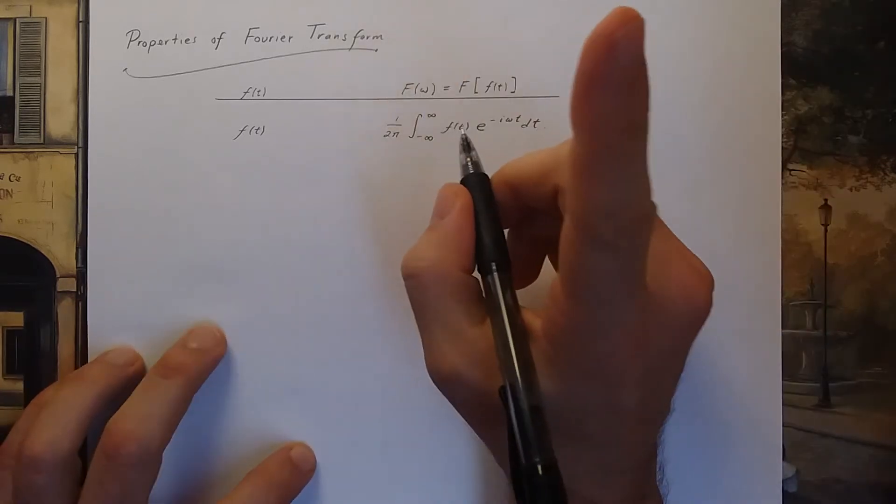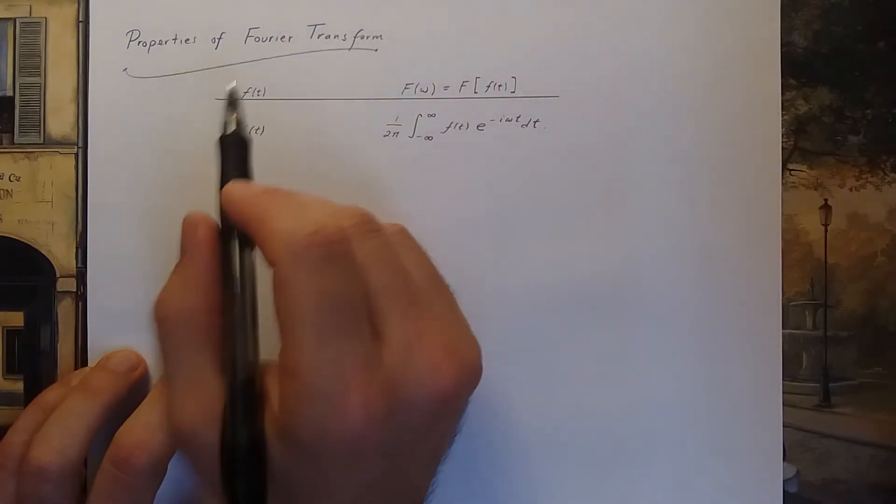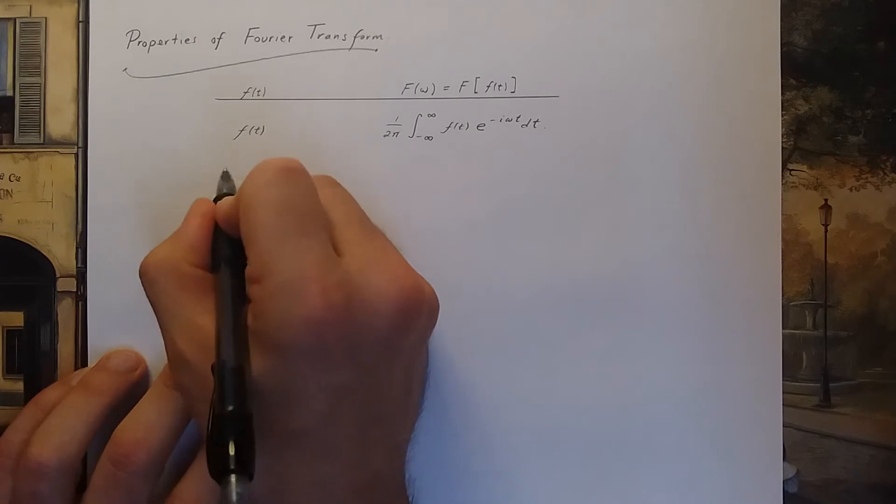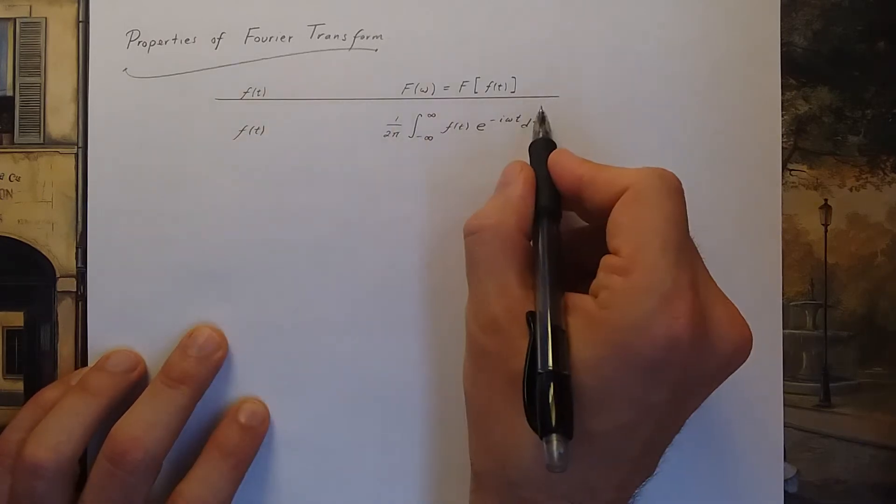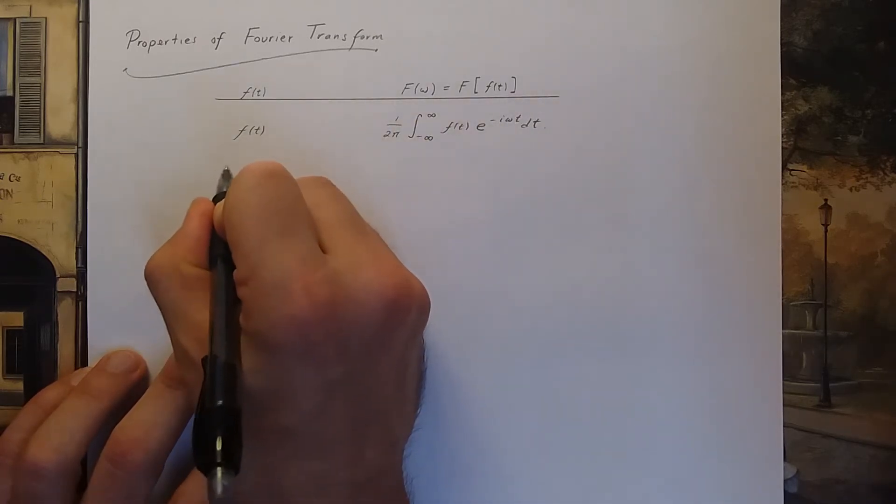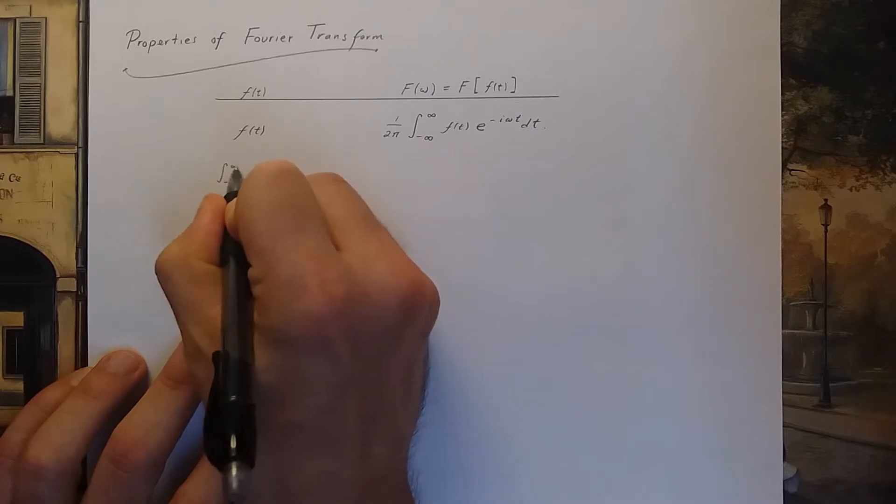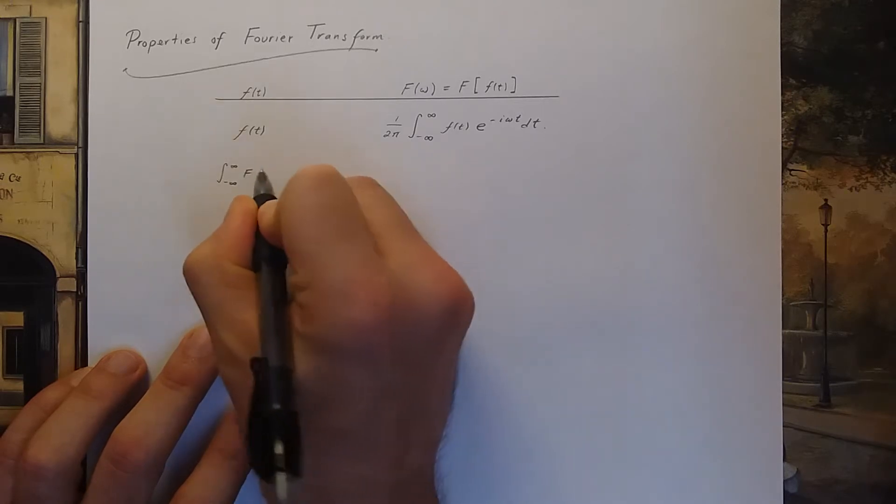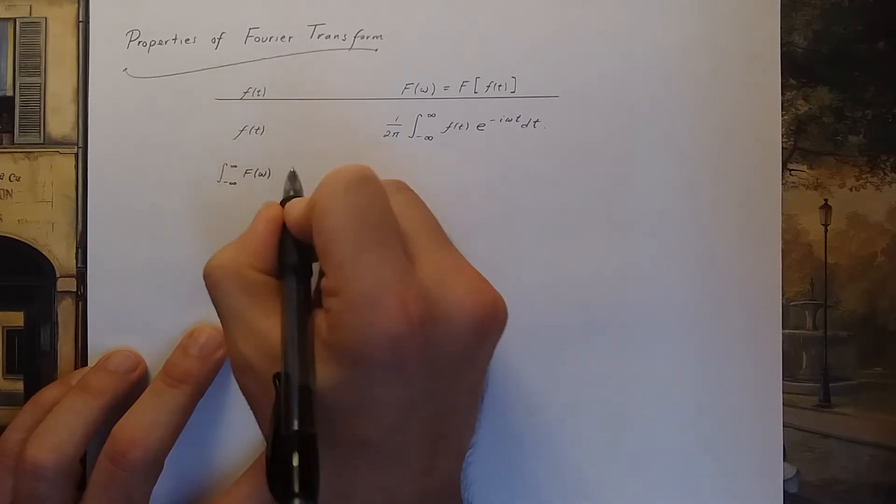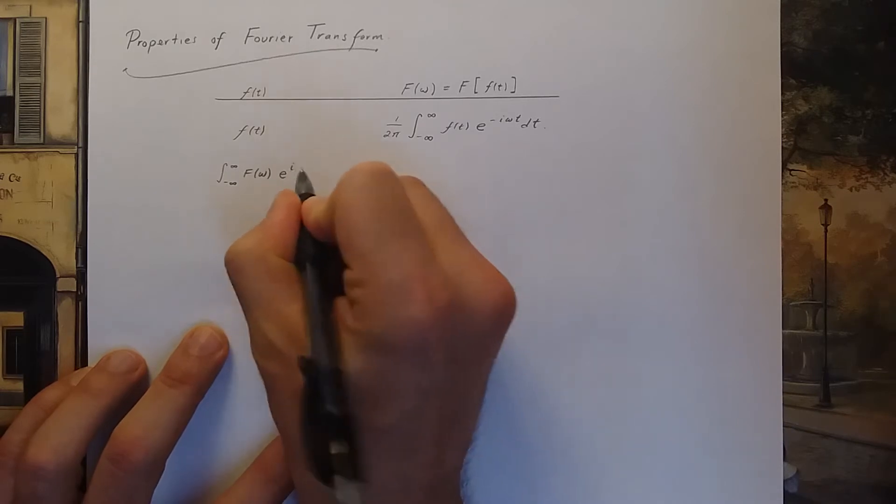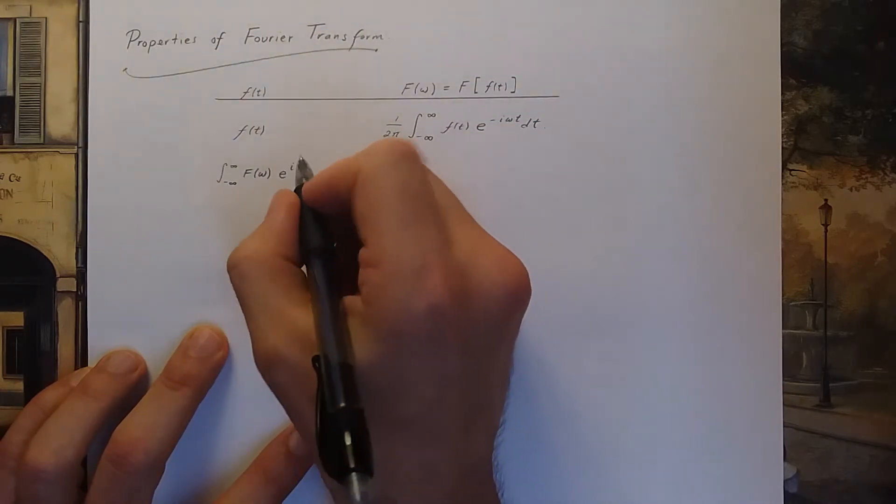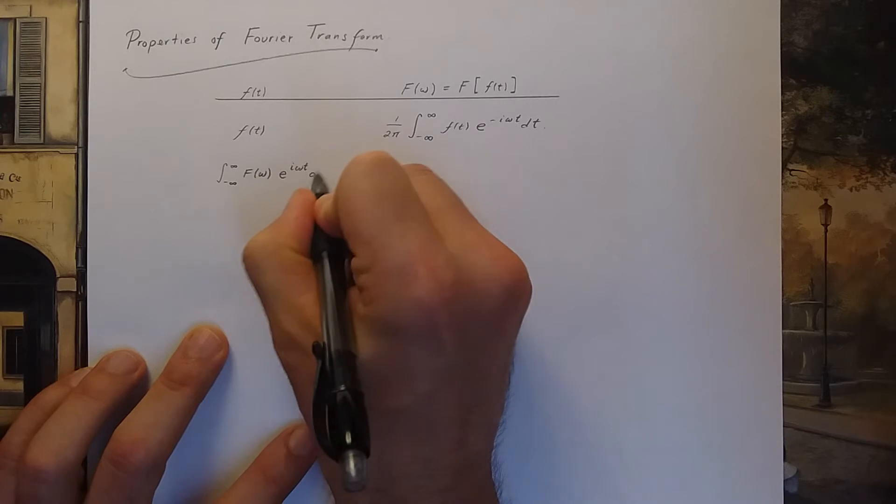Now the last video introduced the important Fourier relations and if I were going to list that on this table I would write it this way. The integral from negative infinity to infinity of the Fourier transform times e to the positive i omega t d omega.